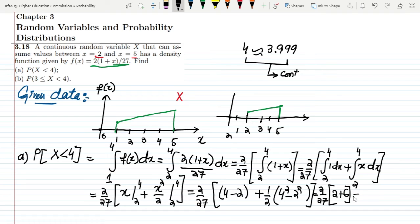Ultimately what we will get is 6 + 2 is 8, 8 × 2 is 16. So 16/27, and that is the solution of part A.